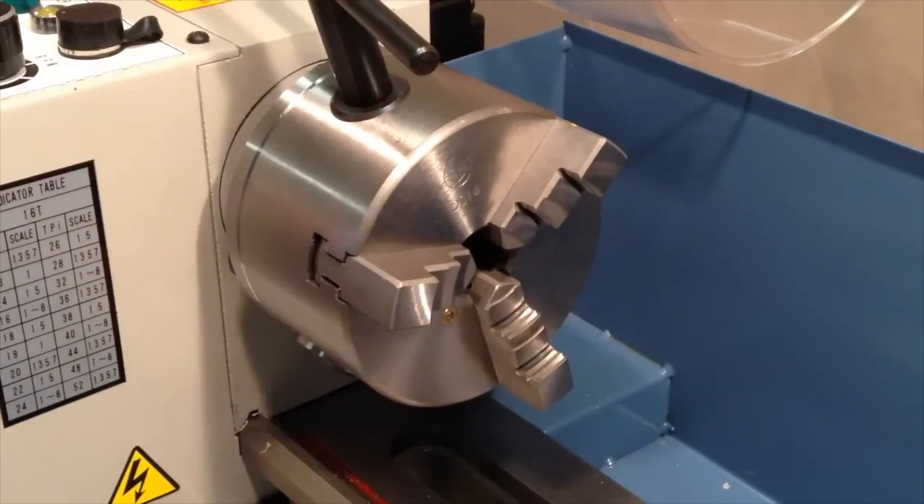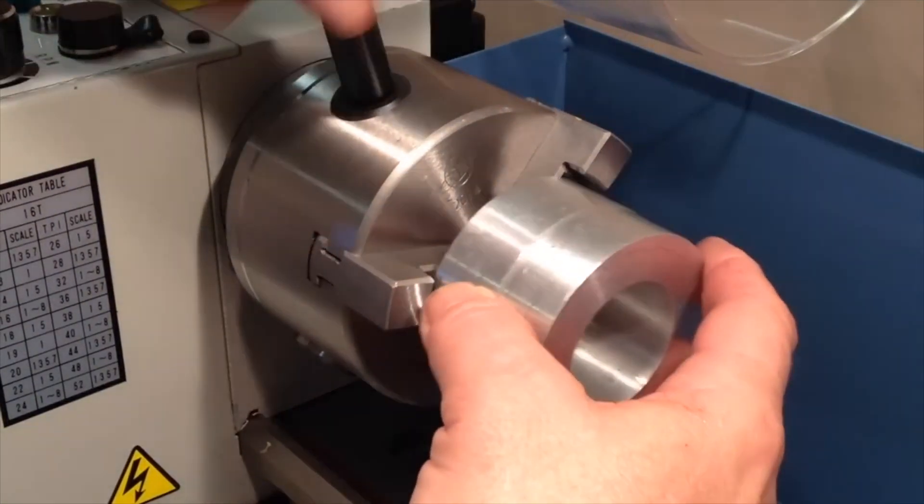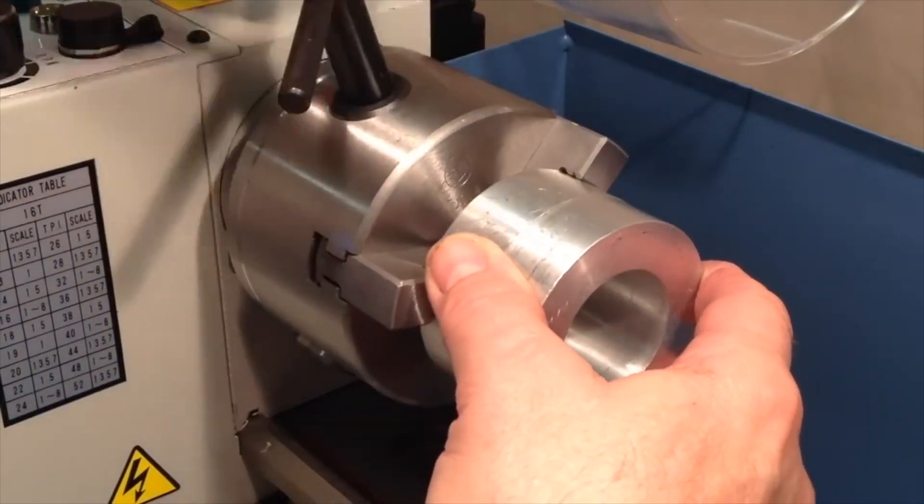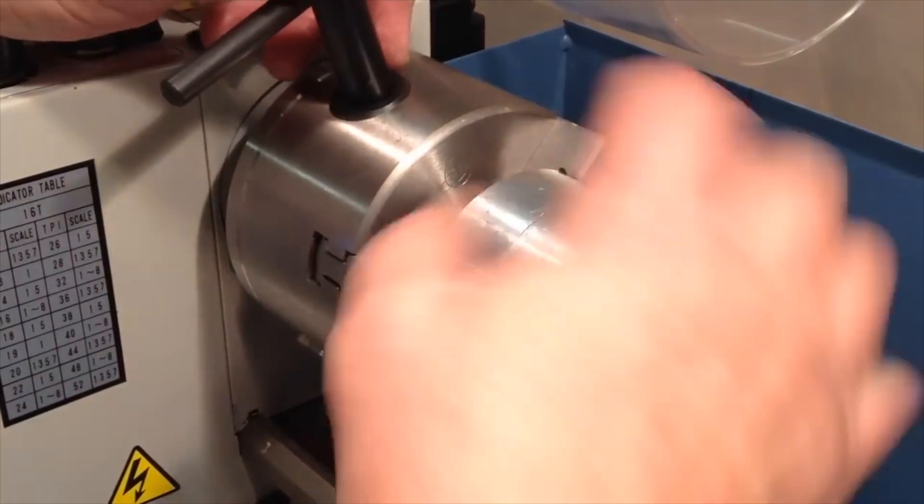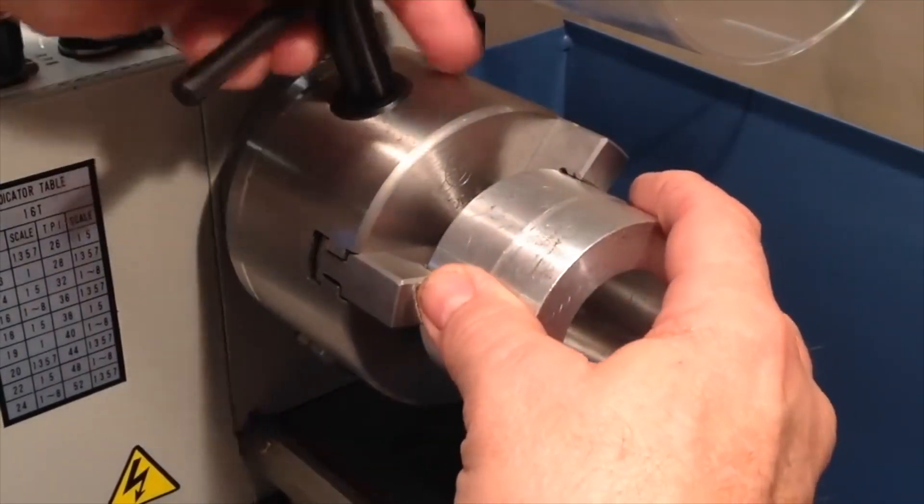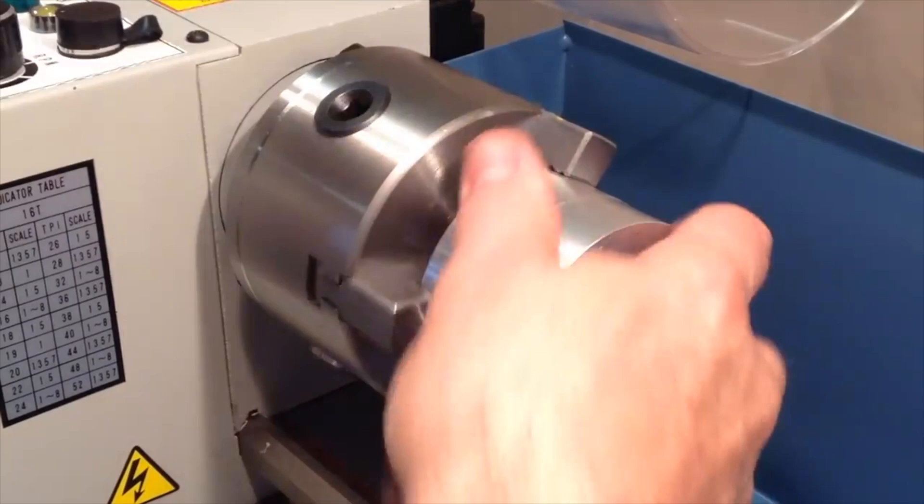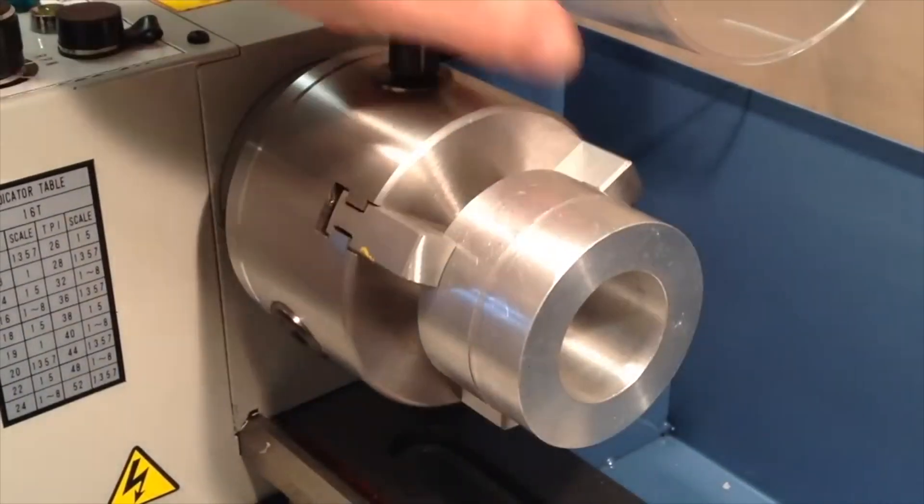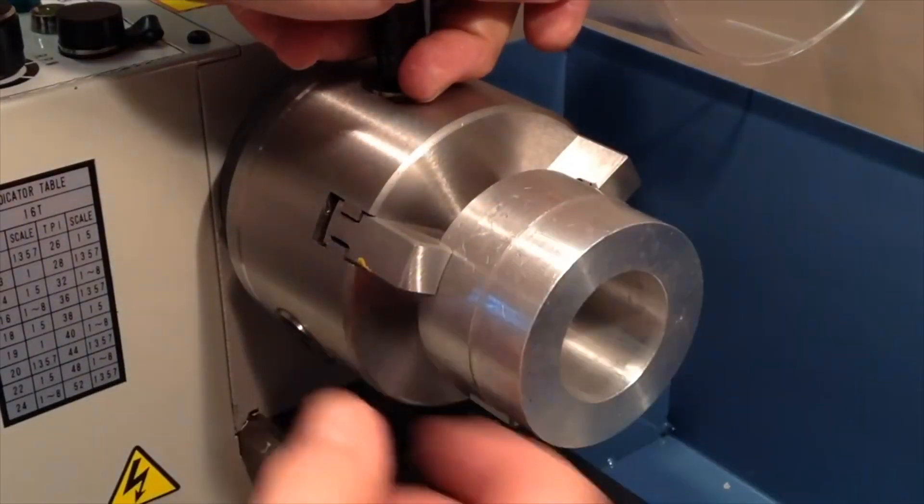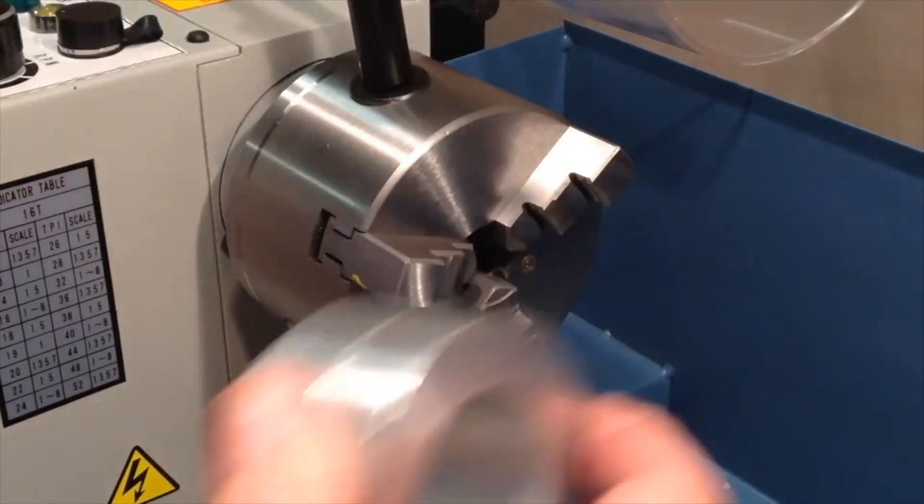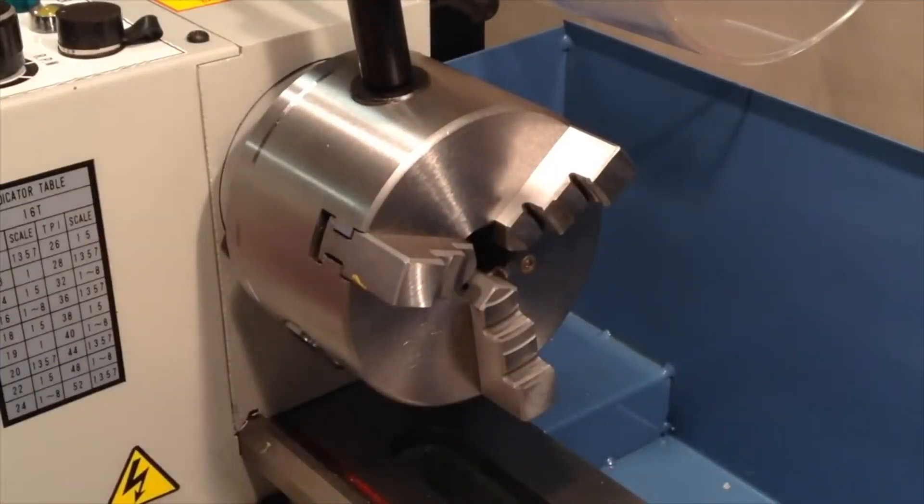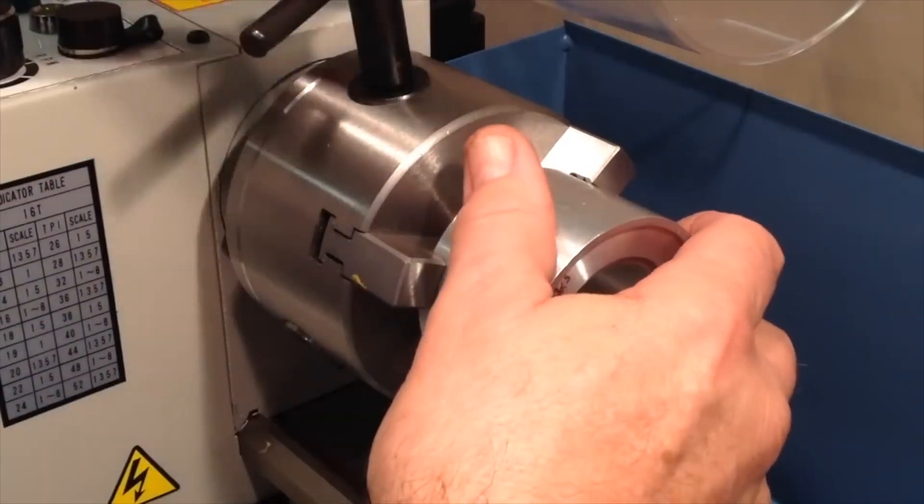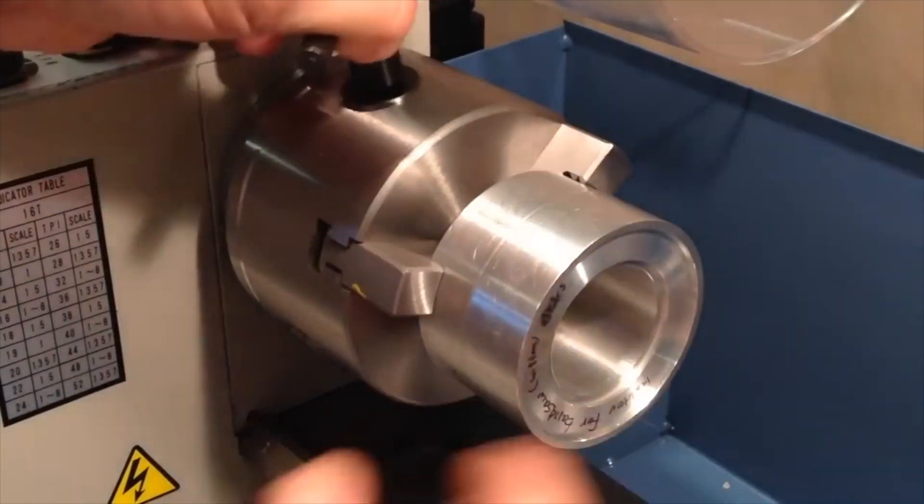All right now with the so-called outside jaws in place I can take this same workpiece. In this case instead of gripping on the inside surface I'm gripping on the outside surface. And I assume that's why they're called outside jaws is because they're typically used to hold a workpiece on the outside surface, however that's true for the inside jaws too so that's a mystery to me but that's what they're called.